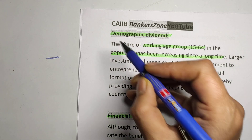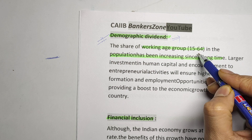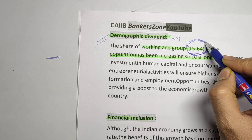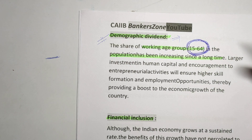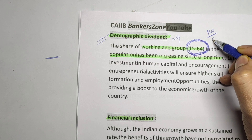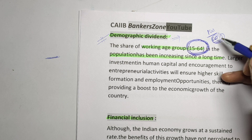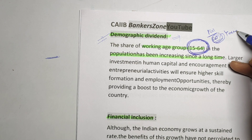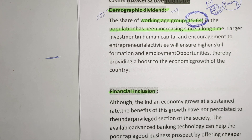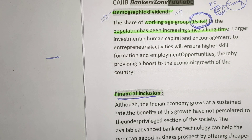An important concept is demographic dividend. The working-age group — roughly 15 to 64 — makes the highest contribution to our population. If we have 100 people in our country, almost 60 percent are working, meaning we are a younger country. That is nothing but the demographic dividend. Next is financial inclusion, which doesn't need much explanation.